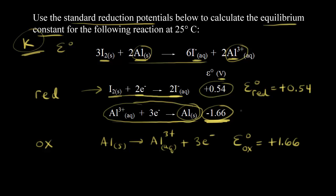Next, we need to balance the equation by making the number of electrons equal in both half reactions. For the reduction half reaction we have two electrons, and for the oxidation half reaction we have three electrons. We need six electrons for both, since the electrons lost must equal the electrons gained. So we multiply the reduction half reaction by three and the oxidation half reaction by two.